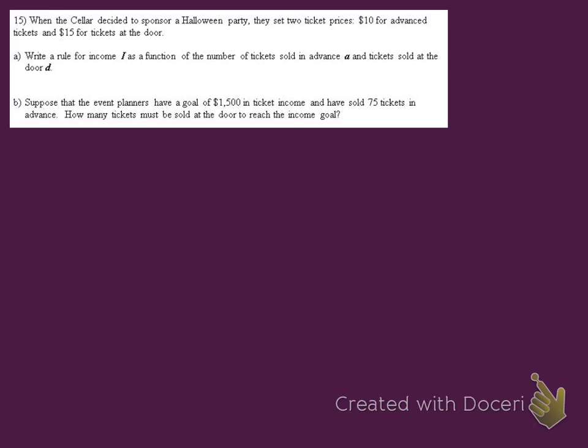Anytime it says to write something as a function of something else, whatever is listed first goes on one side of the equal sign, and everything else goes on the other side. The information we need is the ticket prices: $10 for advance, $15 at the door. So that's how we create our rule: Income equals $10 times the amount of advance tickets plus $15 times the tickets at the door.